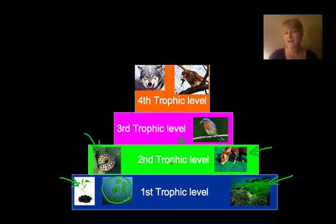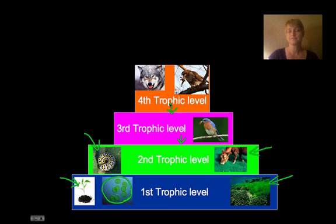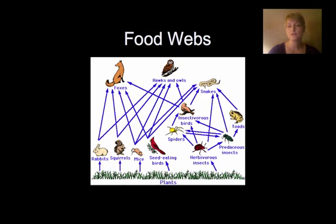The fourth trophic level would be things that eat what's on the third trophic level — the large predators, the top-of-the-food-chain predators. The next thing is food webs, and food webs are made so that we can see how all of these animals are interacting through predation or eating.